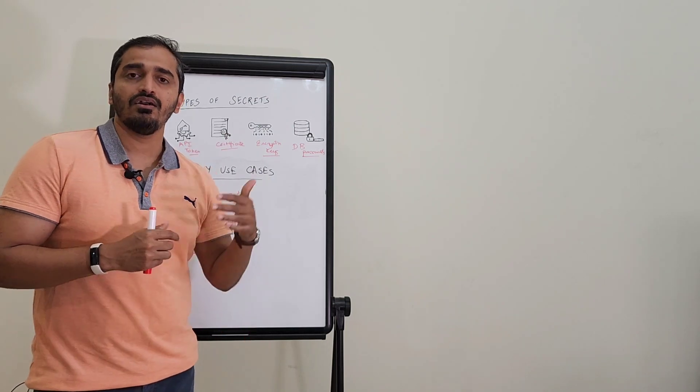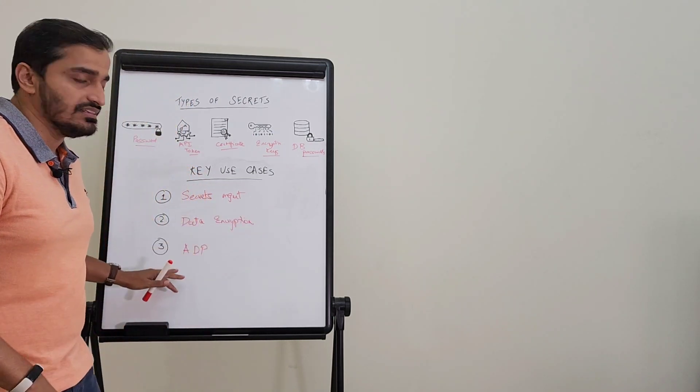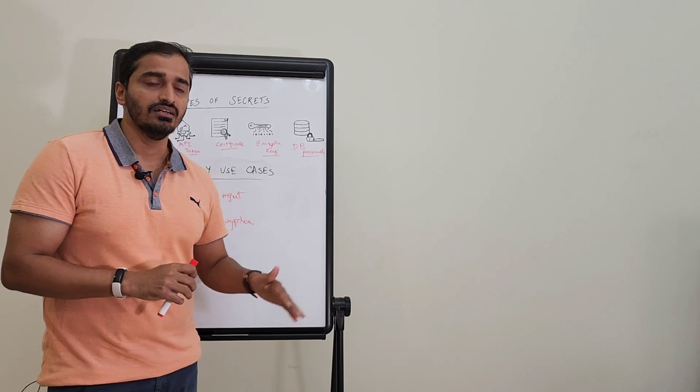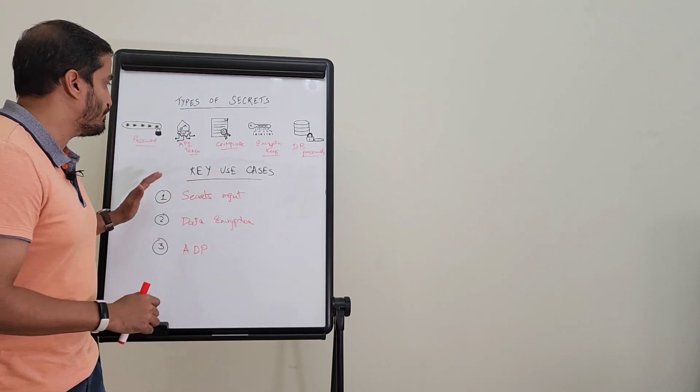This could be related to either a credit card or other personally identifiable information. In normal circumstances this information may not be masked, but with ADP you can mask the data. This covers key use cases for Vault.